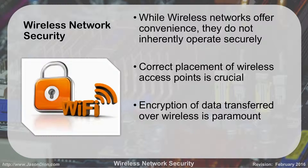We have to make sure we have the correct placement of our wireless access points to ensure that it's secure inside our building. We don't want the signal leaking out into the parking lots. We also have to encrypt our data to make sure it's secure, because if it's unencrypted anyone can read it. If it's encrypted, it's all scrambled and jumbled — they won't be able to read it.